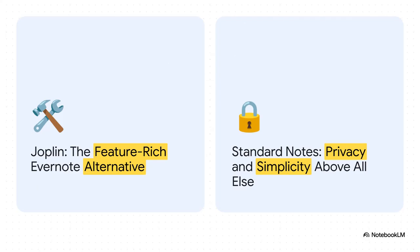Let's set the stage. In one corner, you've got Joplin, which is kind of the spiritual successor to Evernote, built for absolute flexibility and a ton of features. And in the other corner, you've got Standard Notes, which is all about privacy-first and a super minimalist experience. It's really the tinkerer versus the purist.